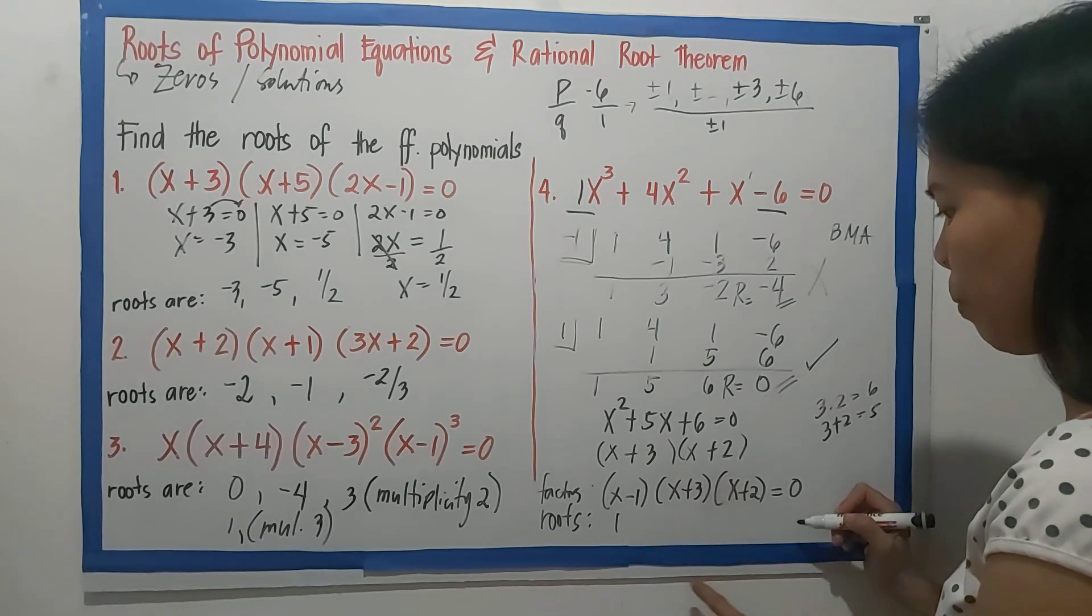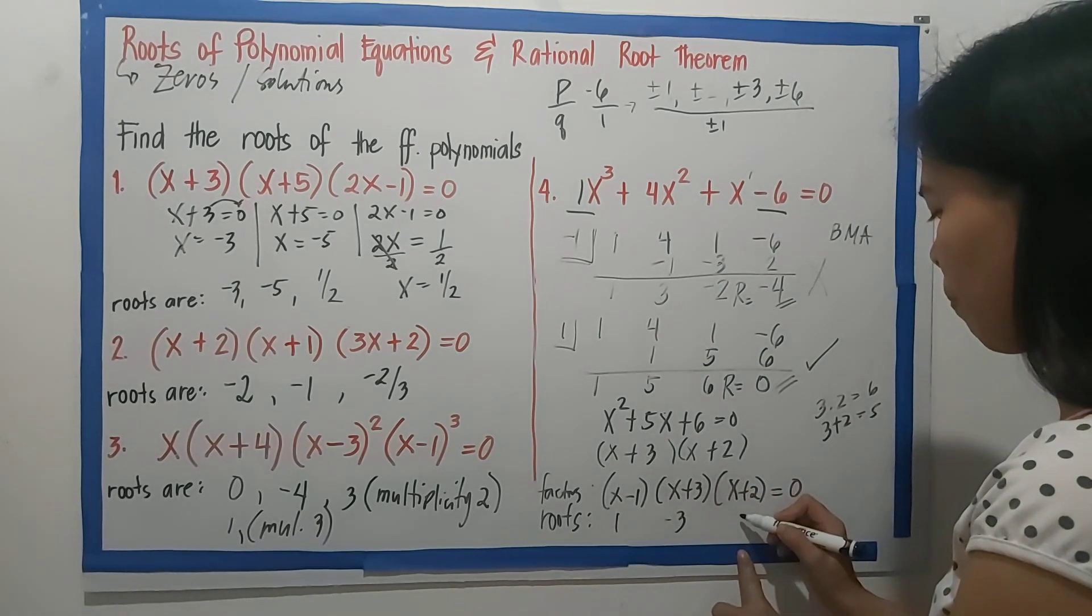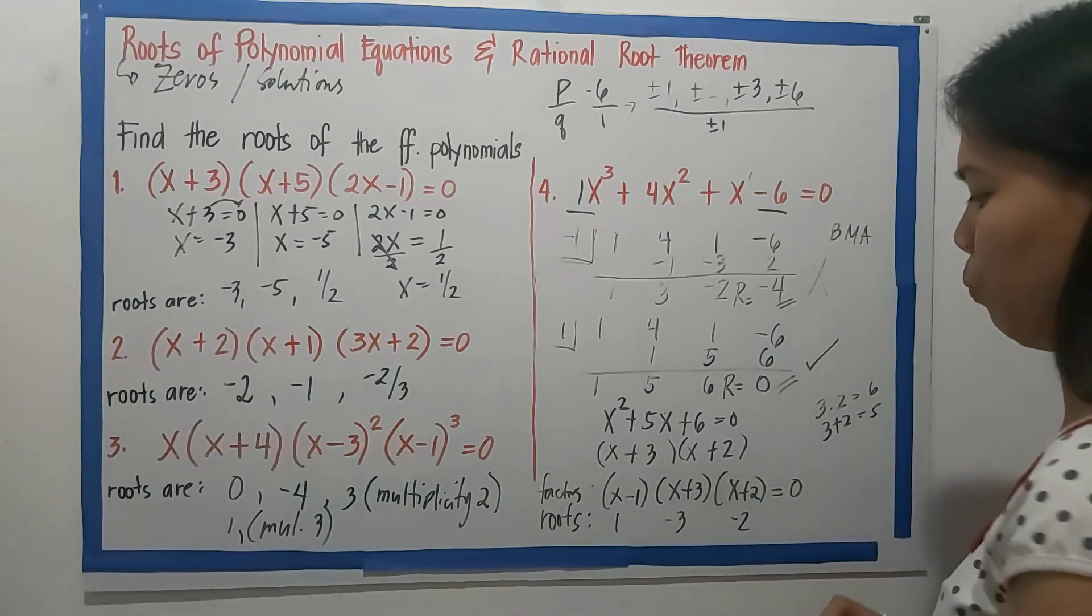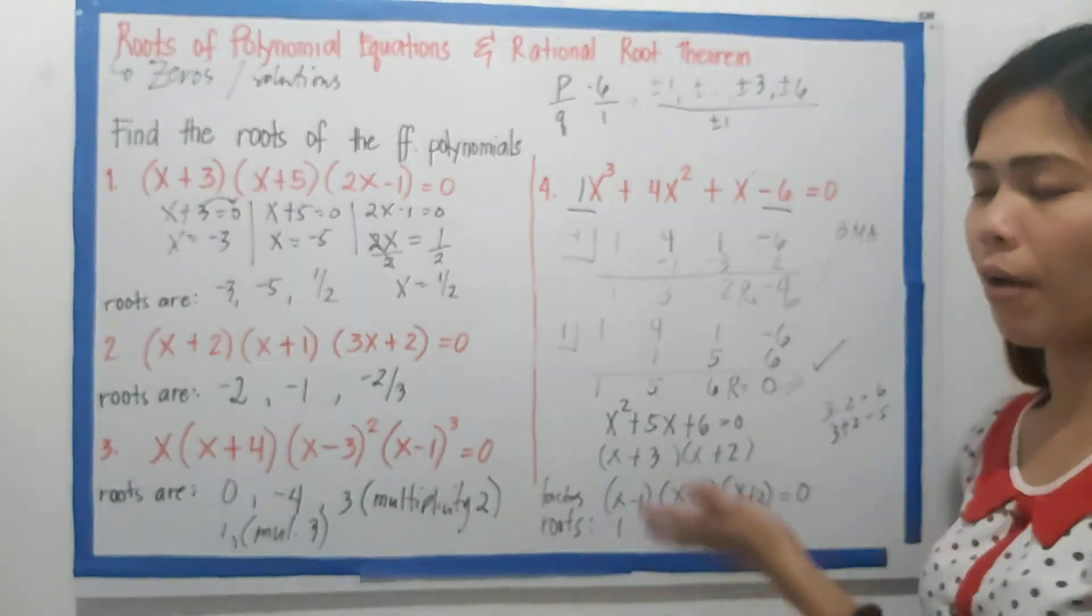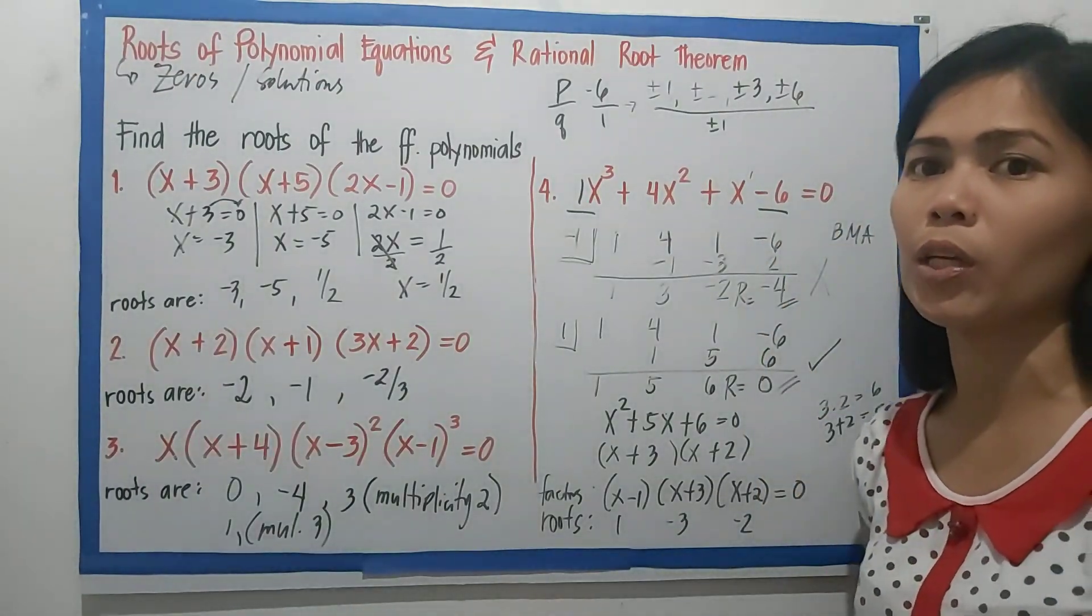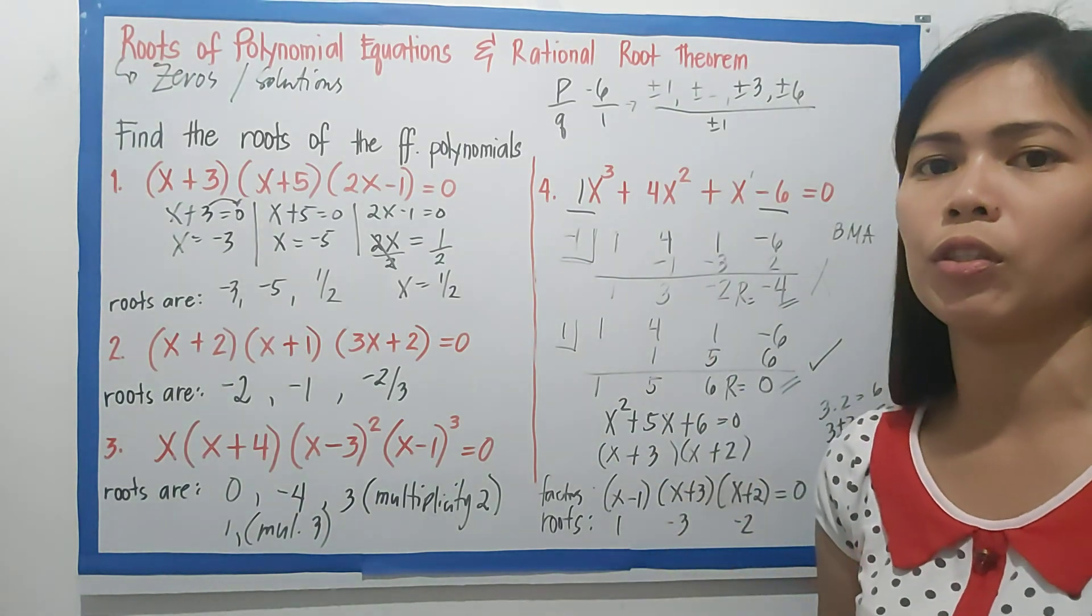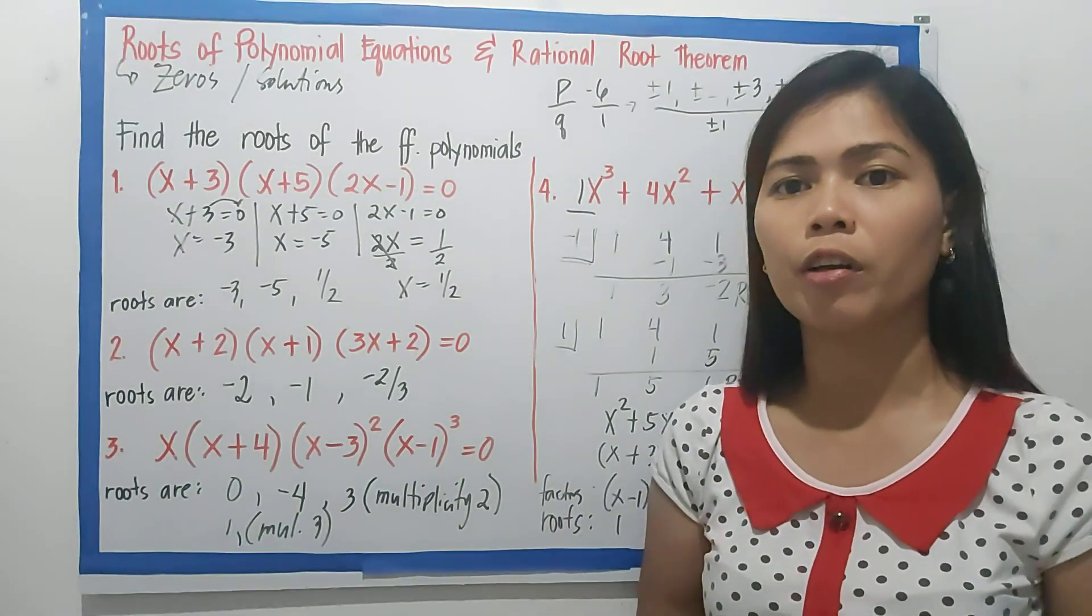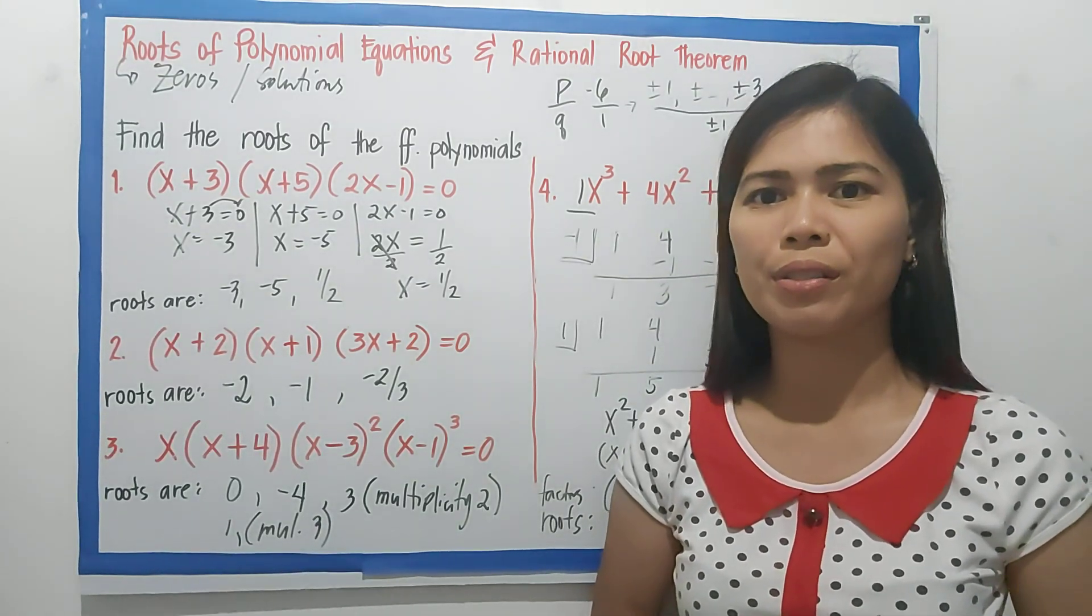And the roots are positive 1, -3, and -2. So, there you have it. We found the roots and the factors from the standard form of a polynomial equation using the rational root theorem and synthetic division. Hope you understand or you learned something from the video. See you in the next upcoming videos. Thank you.